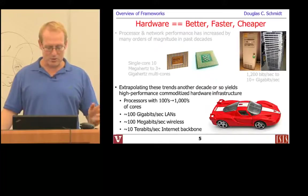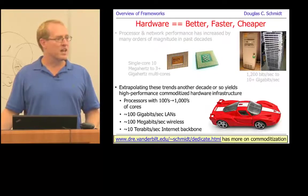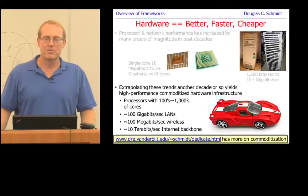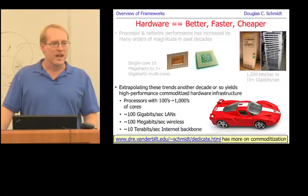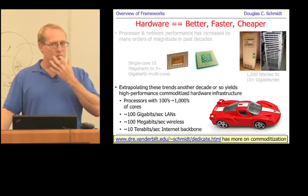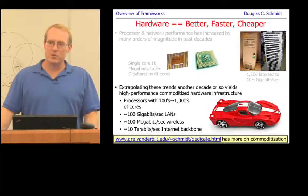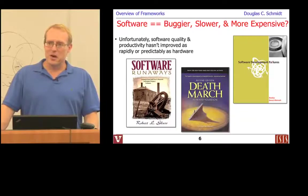Commoditization means you can get hardware and networking technology better, faster, cheaper at a regular rate, which means people in that space have to find new and innovative ways to differentiate themselves from competitors. In contrast, software is often characterized by being buggier, slower, and more expensive than hardware. This is particularly true where you can't easily use off-the-shelf solutions — in the aerospace domain, power domain, defense and avionic systems. Software becomes this enormous boat anchor that people have to carry around with them.